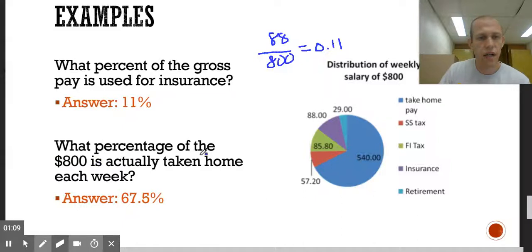What percent of the 800 is actually taken home each week? So take-home pay is in blue right here, that's 540. So same thing, 540 divided by 800 will give us 0.675. So written as a percent would be 67.5 percent.